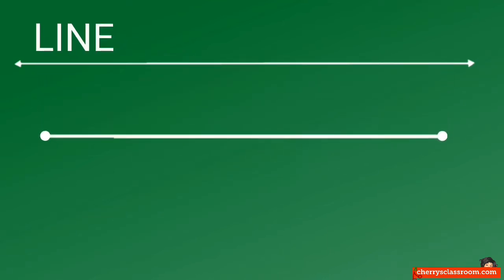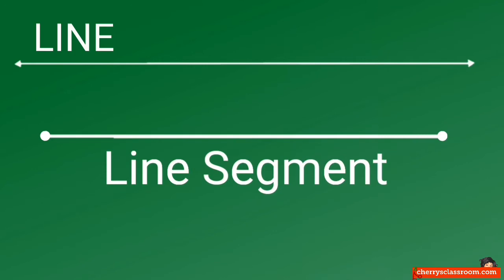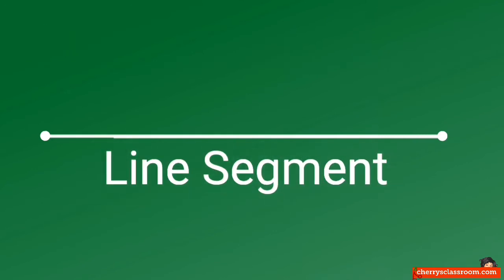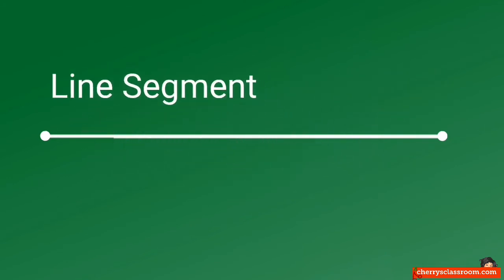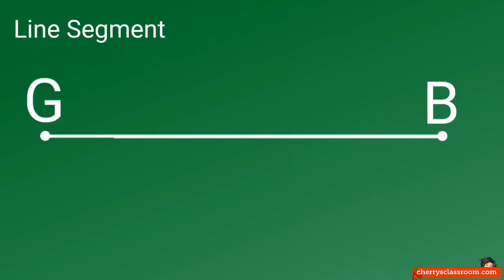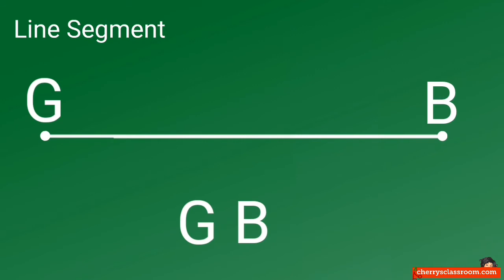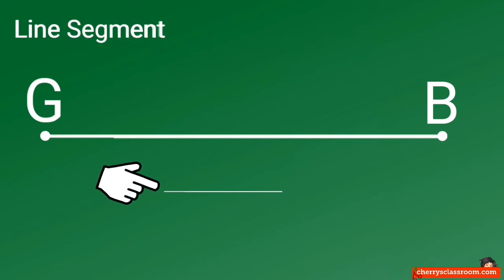A line segment has two endpoints. You name a line segment by using its endpoints. Example: endpoint G and endpoint B. So, it is line segment GB, with this symbol above the two capital letters.